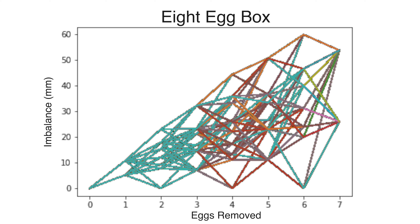The output is lists of averages and standard deviations for each sequence, and the data can also be reviewed in charts like this. Each step on the x-axis removes an egg, and the imbalance is on the y-axis. The goal is to avoid the high imbalance paths and to use the lowest path possible.